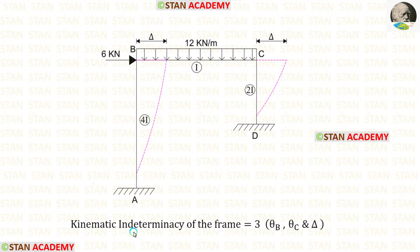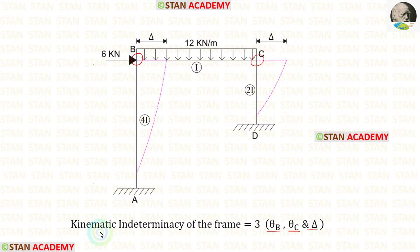Now let us find the kinematic indeterminacy of the frame. At joint B we have slope theta B, and at joint C we have slope theta C. We also have the sway. So the kinematic indeterminacy of the frame is equal to 3.